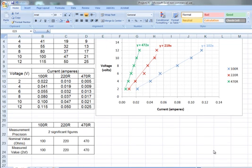If we wanted to investigate the accuracy of the resistors any further, then we would need to increase the precision of our measurements, possibly by employing a digital multimeter.